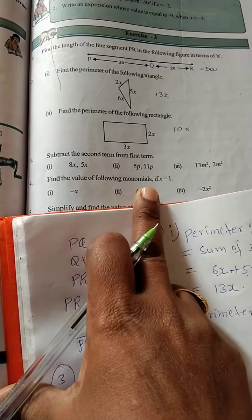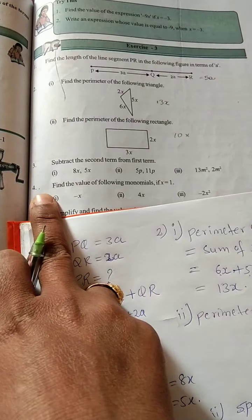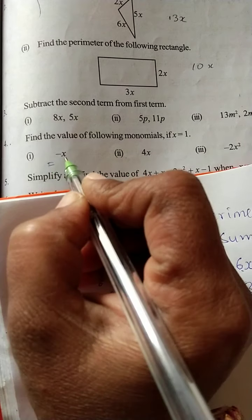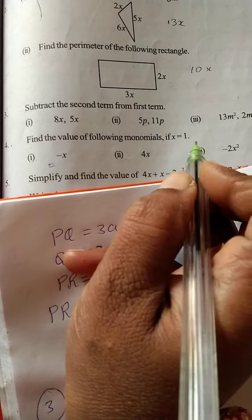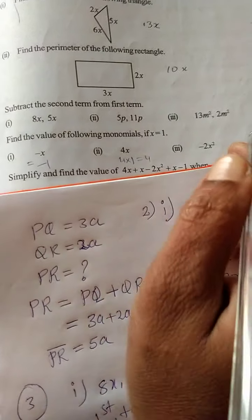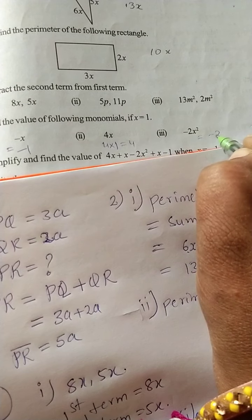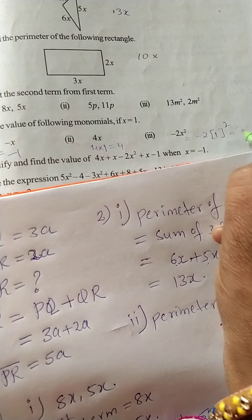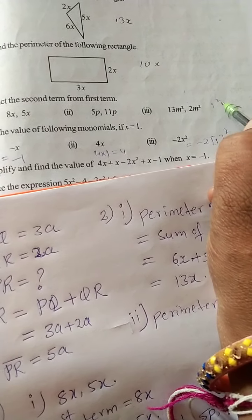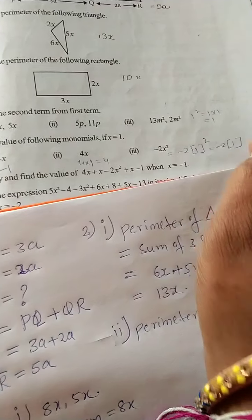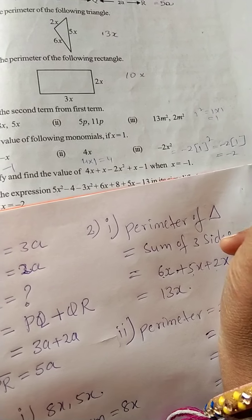Fourth question: find the value of the following monomials if x equals 1. Directly we can substitute the value of x. Instead of x we write 1, so the first gives minus 1. Next, 4 into 1 equals 4. Next, minus 2 into x² — substituting x equals 1: 1 squared equals 1 into 1 equals 1. So minus 2 into 1 equals minus 2. Minus 2 is the answer.